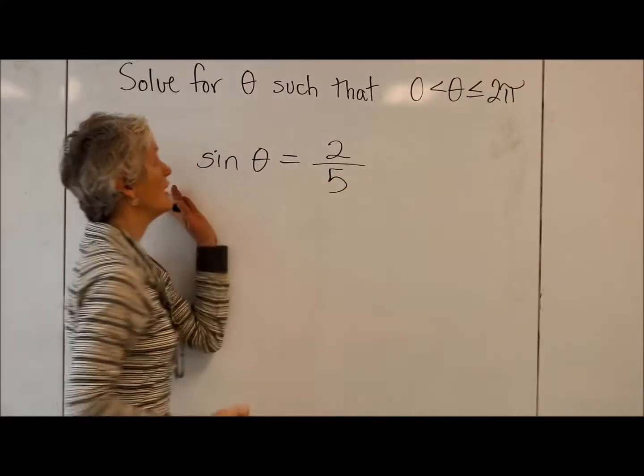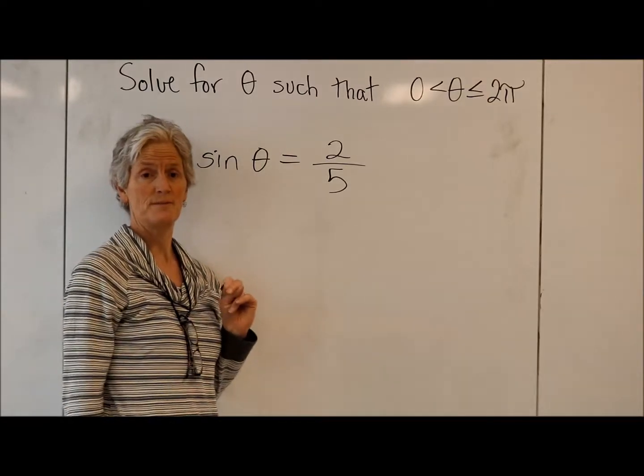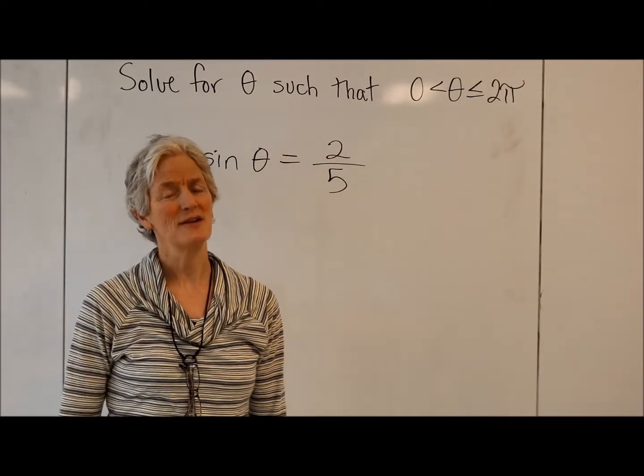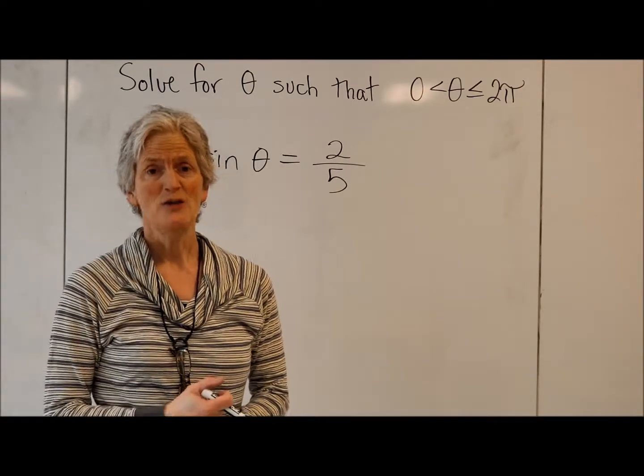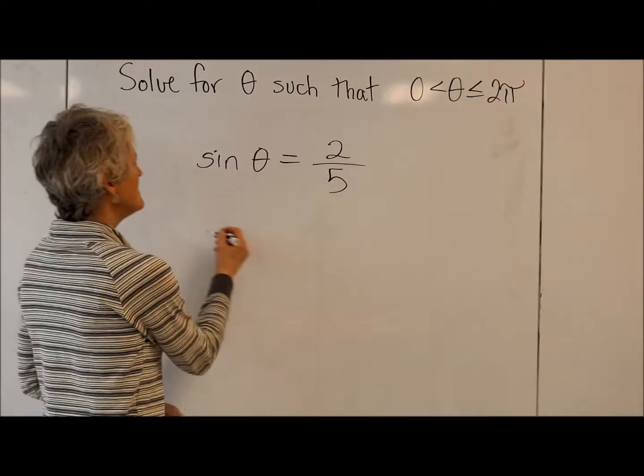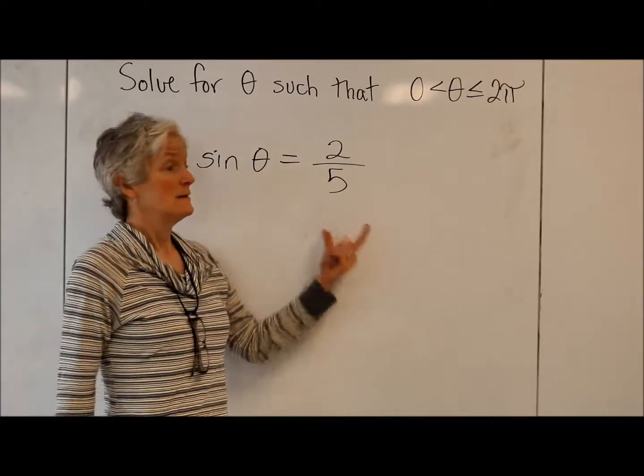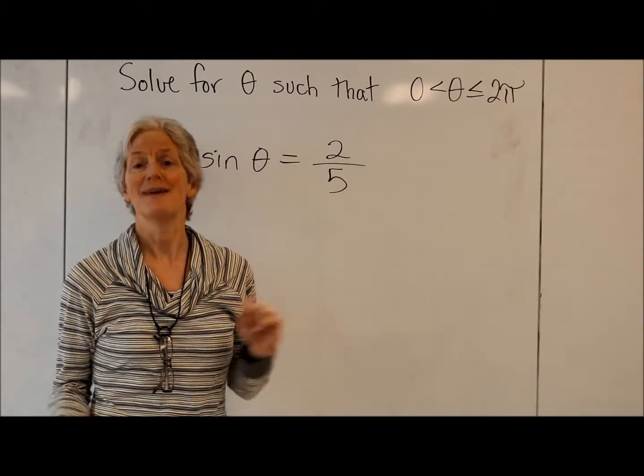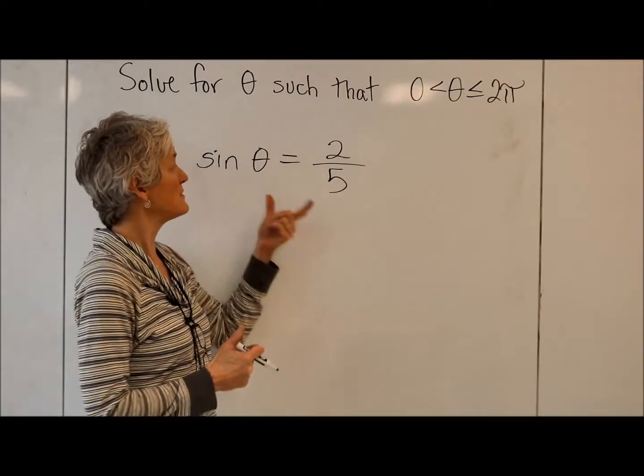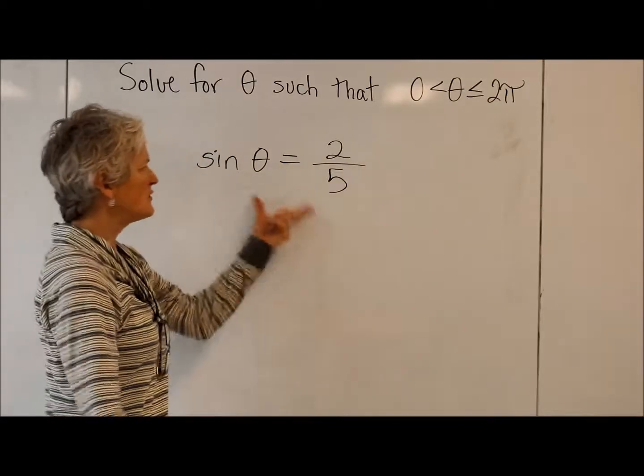So let's say I have this equation: sine of theta equals 2 fifths, where 0 < theta ≤ 2π. 2 fifths is not one of those nice ratios on my unit circle. So I'm going to have to do some work, and it's going to involve using a sine chart or a piece of technology, our graphing calculator, which is programmed to have all the angles that will give me a ratio of 2 fifths.